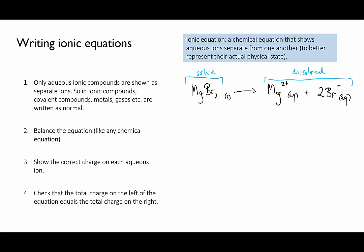Second, as with any chemical equation, the atoms must be balanced on the left and the right of the equation. Here we check that there's one magnesium ion and two bromide ions on each side.